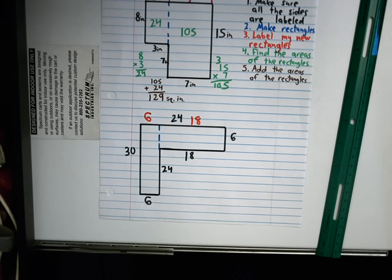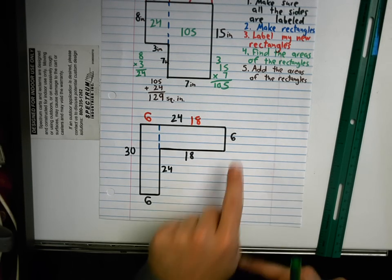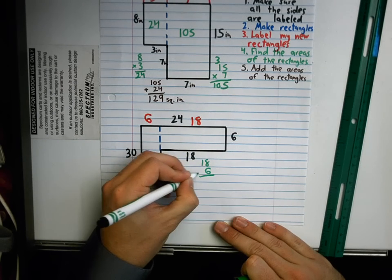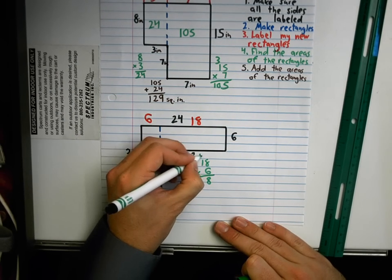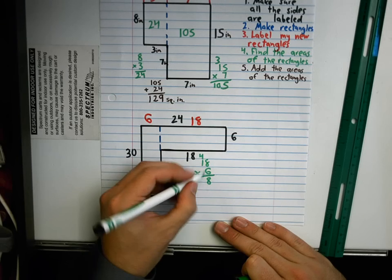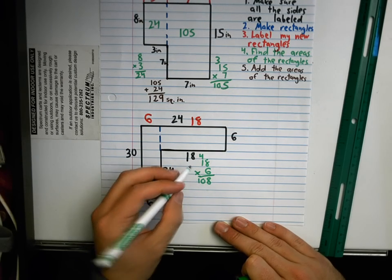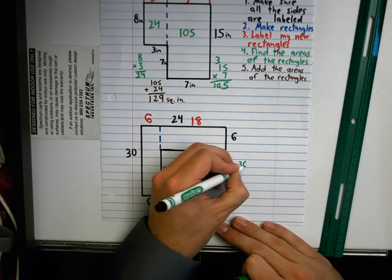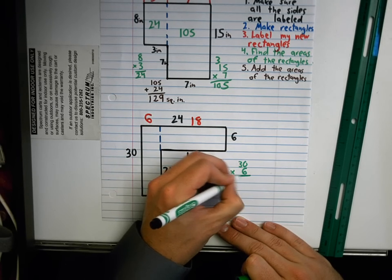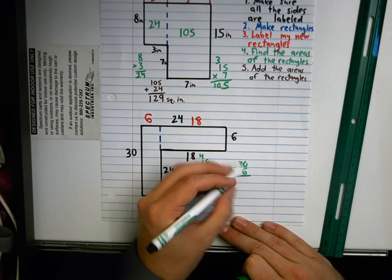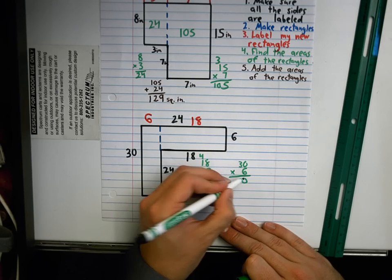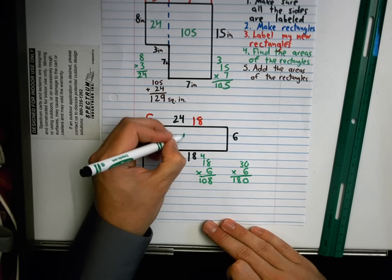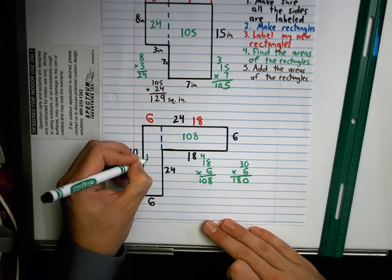And now I'm going to find the area of each rectangle. This one is 18 times 6. So I'm going to go 18 times 6. That's 48. Put my 4 up here. 6 times 1 is 6. Plus 4 is 10. Then I'm going to go 6 times 30. Oh, that's a big one. 6 times 0 is 0. 6 times 3 is 18. 180. So this one is 108. This one is 180.